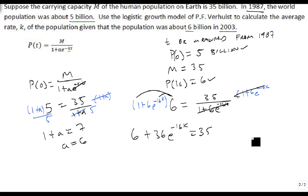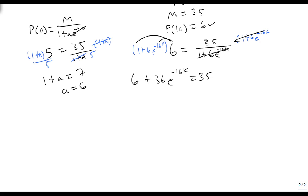All right, now, we subtract 6 from both sides. That gives us 36E to the minus 16K equals 29. Divide both sides by 36. That gives us E to the minus 16K equals 29 over 36.